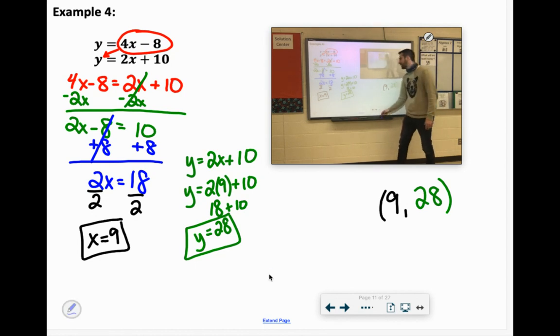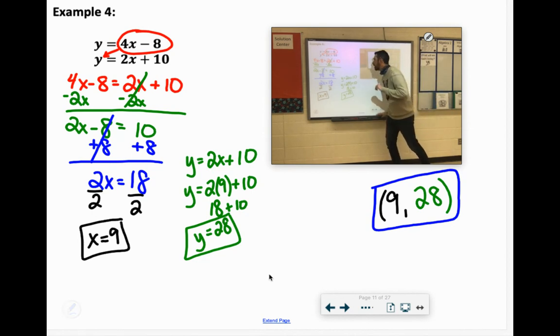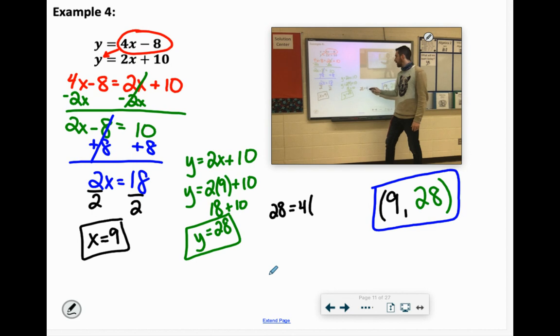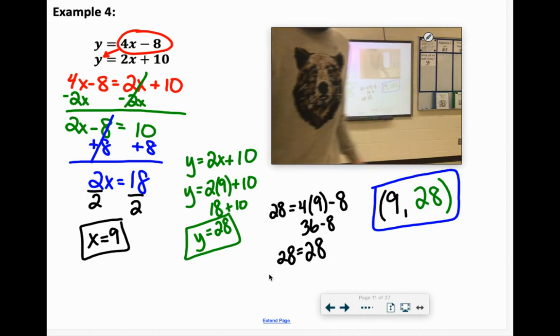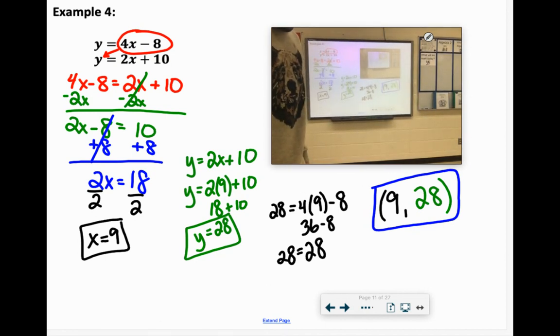Now, if we were to substitute that into the other equation, would that work? I don't know. Yeah, it would. Let's try it. So y equals 4x minus 8. 4 times 9 is 36, minus 8 is 28. Oh, we're going to get 100% on the quiz or test. We are so smart. I cannot believe it.